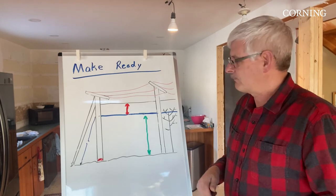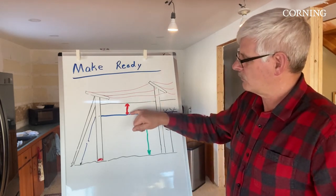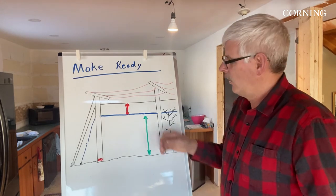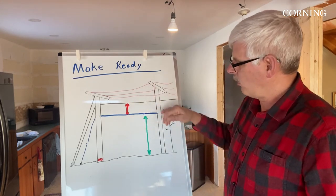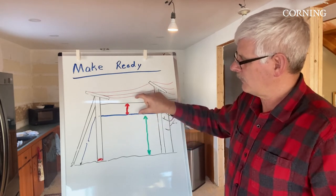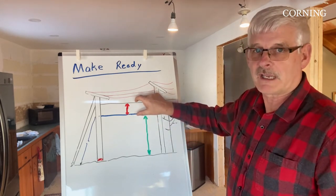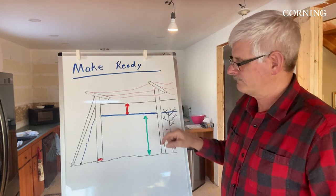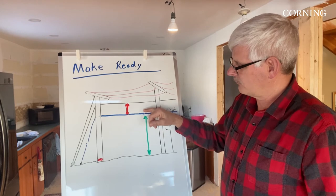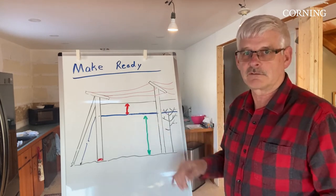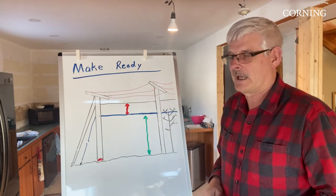So what happens when they run into a situation when there isn't enough clearance between these two? Well, they have a couple options. One is if there's room on the pole to lower the cable down, bringing this cable back into spec to be safe to work on. However, they need to calculate if dropping that cable means a truck is going to catch it. They'll look at that aspect.